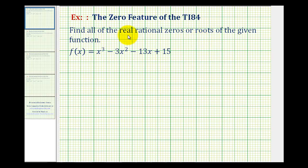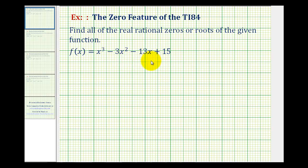Welcome to a lesson on how to use the zero feature of the TI-84 graphing calculator to find the real rational zeros or roots of a polynomial function. This first example will be pretty straightforward, and then in the second video we'll take a look at one that's a little bit more challenging.